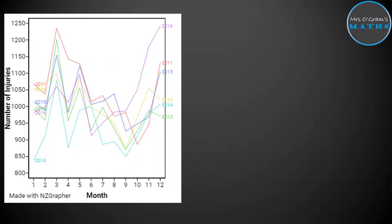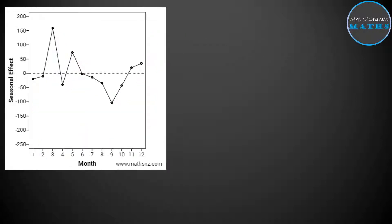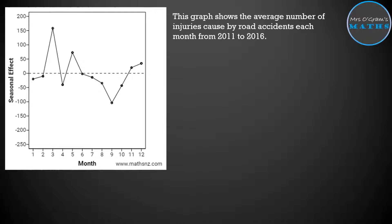If we take a closer look, we can see that the number of injuries caused by road accidents followed a similar pattern each year from 2011 to 2016 — this is how you'd start writing about it. And then if we take a look at the average, we can see that the graph shows the average number of injuries caused by road accidents within each month.